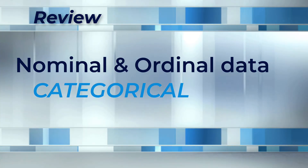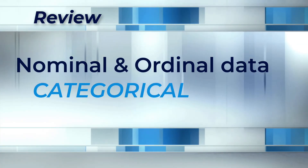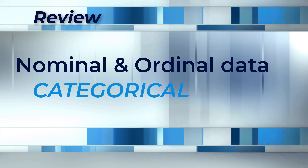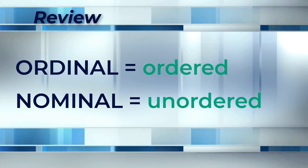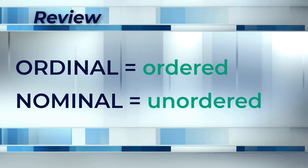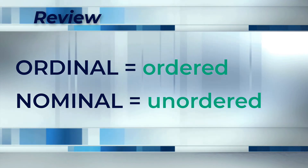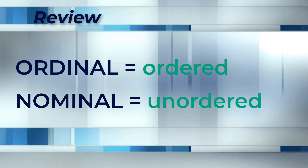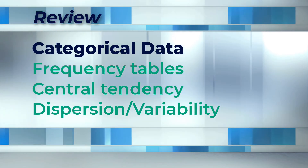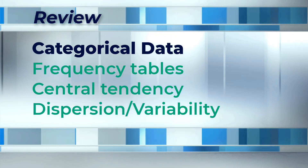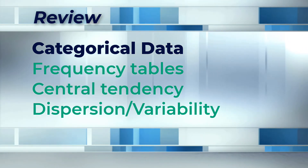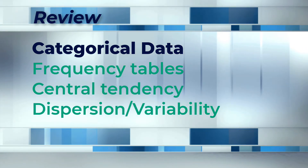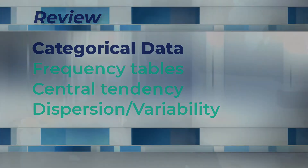Let's review what you have learned. You now understand that both nominal and ordinal data are categorical. Ordinal data have ordered categories, but nominal data do not. You know how to create frequency tables for individual categorical variables, and which measures of central tendency and dispersion to choose.